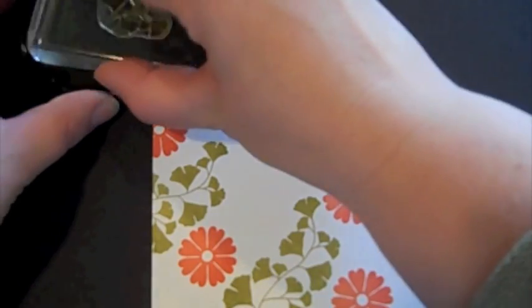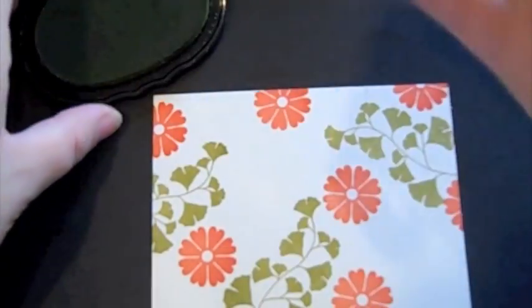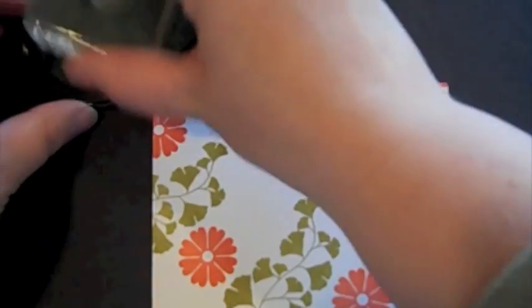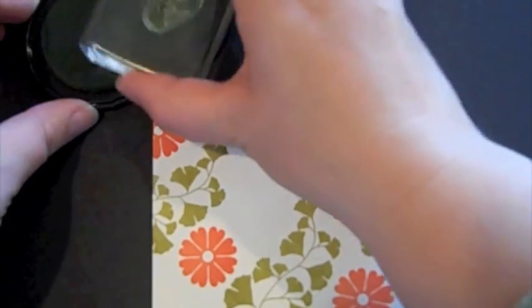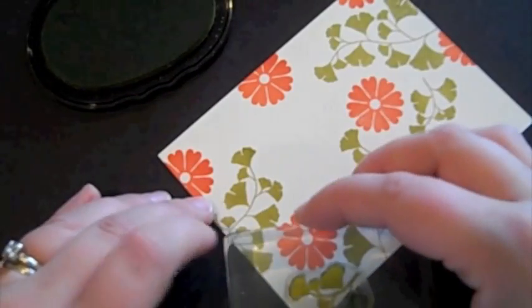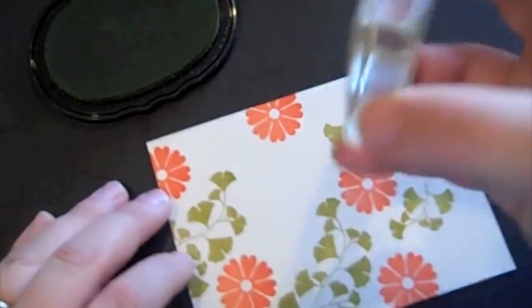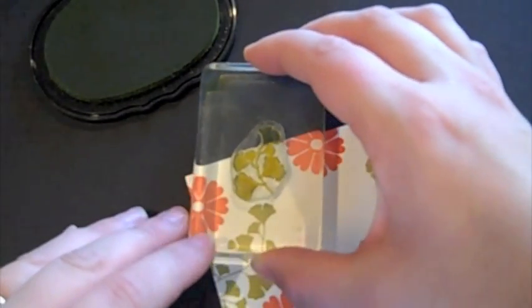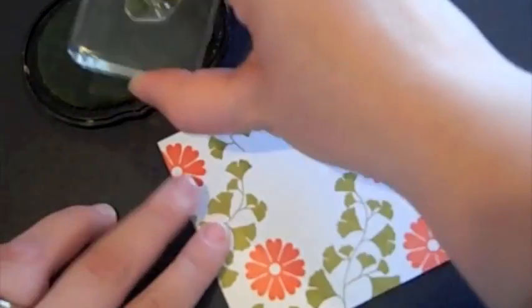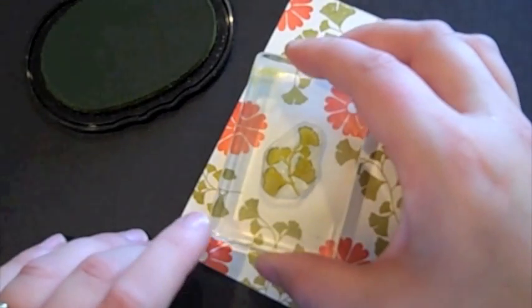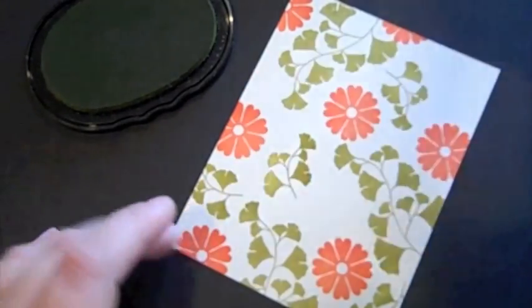Now I'm going to go back in with Ripe Avocado again, and I'm going to use the smaller solid leaf from Harvest Berries. And I'm just going to kind of weave these in around the large flowers that I just did to make them look framed by the leaves. Just kind of fill it here, there, everywhere.